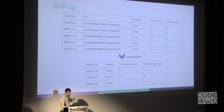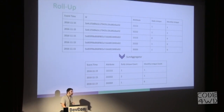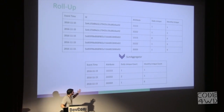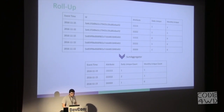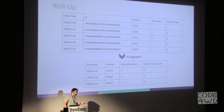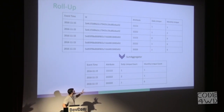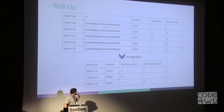In the rollup approach, we calculate the necessary aggregations during indexing time. Before indexing new data, we specify what aggregations we want to make, and Druid will store only the calculated results. Then during query time, all Druid has to do is pull the pre-calculated result. This approach has two benefits: queries are much faster, and because we do the aggregations during indexing time and don't store the original dataset, the resulting index is much smaller.